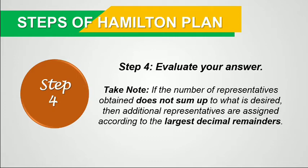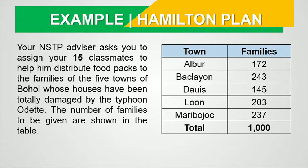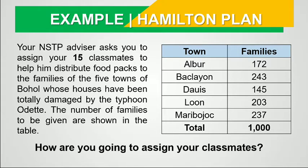Let's take this situation as our example. Your NSTP advisor asks you to assign your 15 classmates to help distribute food packs to the families of the five towns of Bohol whose houses have been totally damaged by Typhoon Odette. The number of families to be given are shown in the table, with a total number of families of 1,000. How are you going to assign your classmates?